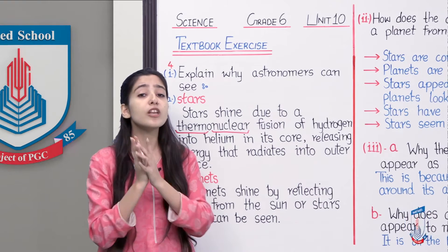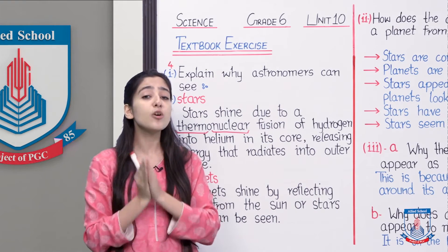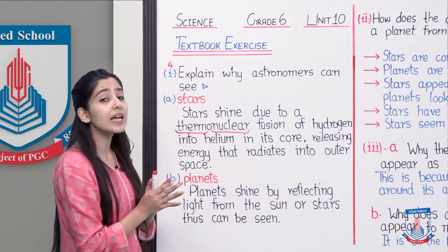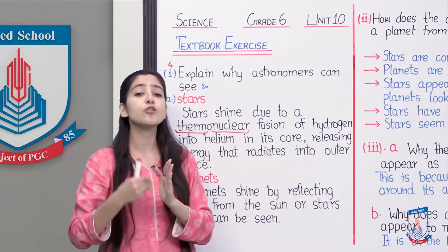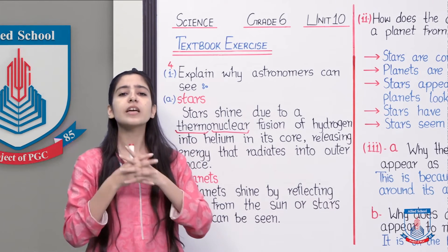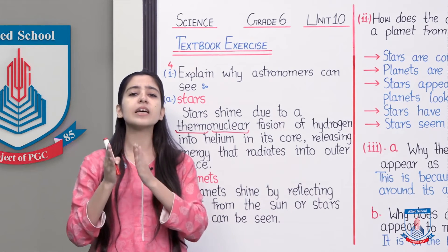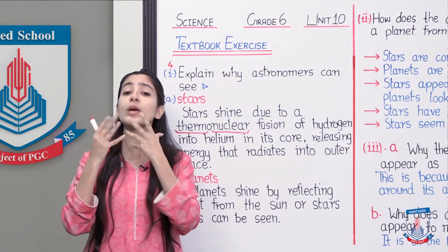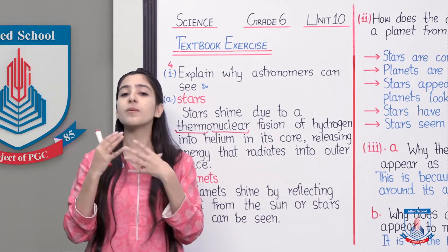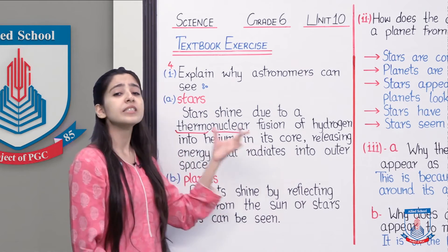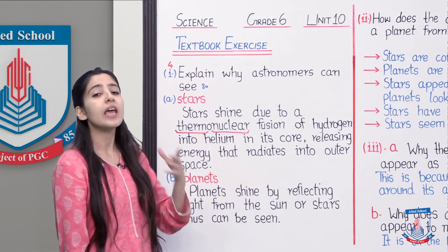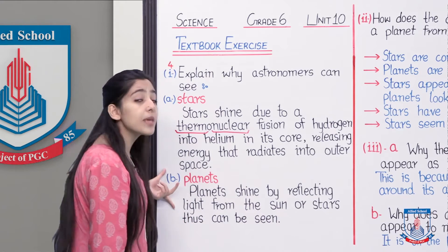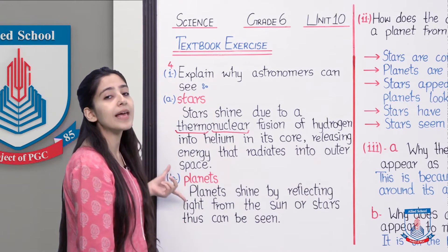Yeh hua luminous object — ke ek luminous object, jo ki yahan pe star hai, uske andar kis tarha se light produce hui? Toh aapko pata chal gaya ke obviously agar kisi cheez mein light produce ho raha hai, toh humein woh automatically twinkle karti hui, jagmagati hui nazar aa jayegi, jis tarhan humein stars nazar aate hain. Kya phir suraj nazar aata hai? Aate hain B part ki taraf, which is about planets.